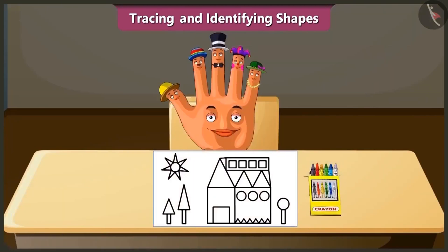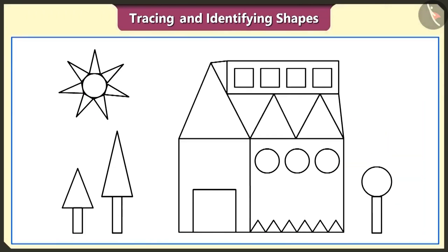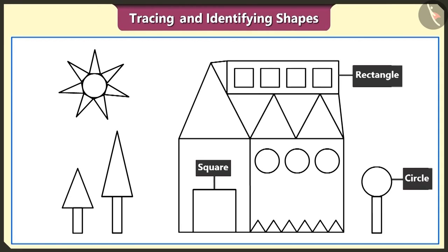Friends, let's see the second example now. Look — this is a figure made by tracing square, rectangle, circle and triangle shapes.